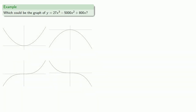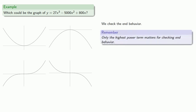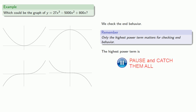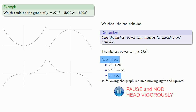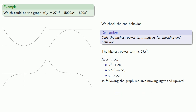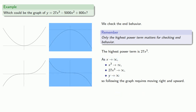Or we could try to identify a graph like 27x cubed minus 5000x squared plus 800x by checking end behavior. Remember, only the highest power term matters for checking end behavior, and so that highest power term is 27x cubed. As x goes to infinity, x cubed goes to infinity, 27x cubed goes to infinity, and y goes to infinity. So following the graph requires moving right and upward, which means we can eliminate two of the candidate graphs from consideration.